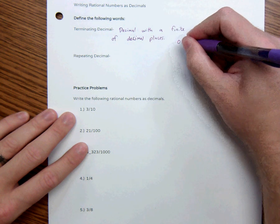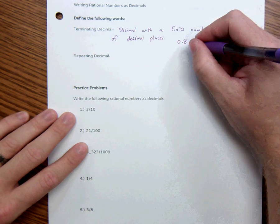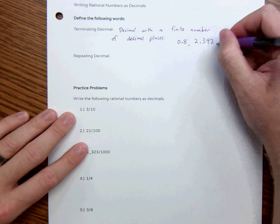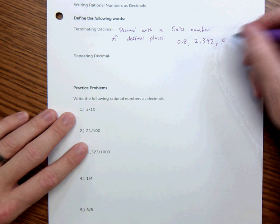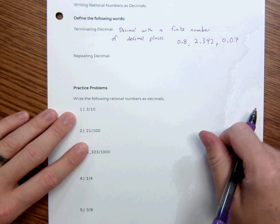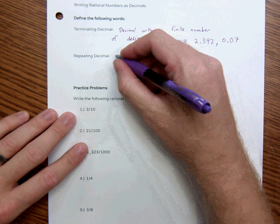For example, 0.8 stops, 2.342 stops, or 0.07, but as long as it doesn't keep going on forever.